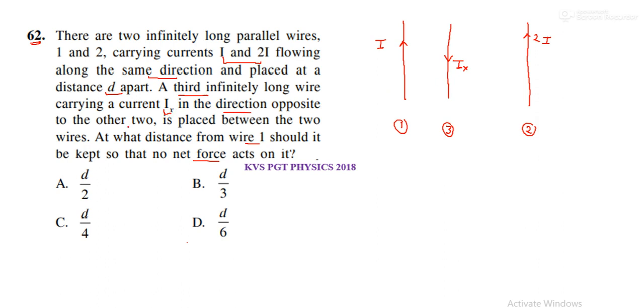In the direction opposite to the other two is placed between the two wires. At what distance from wire 1? Now we have to find the distance from the first wire to the third wire where the force can be zero.